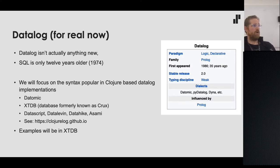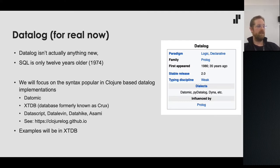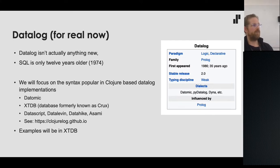In this talk we'll focus on the syntax popular in Clojure-based Datalog implementations. These include Datomic, XTDB (formerly known as Crux), DataScript, Datalevin, DataHike, and Asami — very popular in the Clojure space. You can look at differences between these implementations at the clojure-datalog GitHub page; all examples here will be in XTDB.